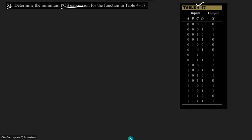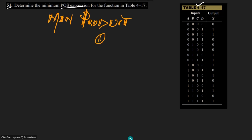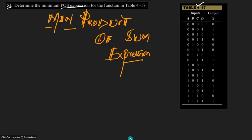The topic of today's lecture is the minimum product of sums expression. The steps will remain the same — here I have four variables, so first of all I have to draw the Karnaugh map for these four variables.